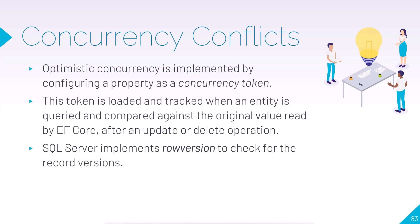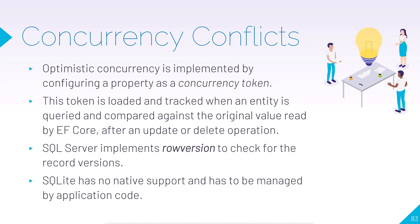SQL Server implements row version to check for record versions, and that is almost an innate feature that SQL Server has. Not every database engine has it — SQLite, for instance, does not. So we would have to do that from application code, where every time we update the record, we actually update the version manually, and then that check can happen later on by EF Core standards. So this is optimistic concurrency.